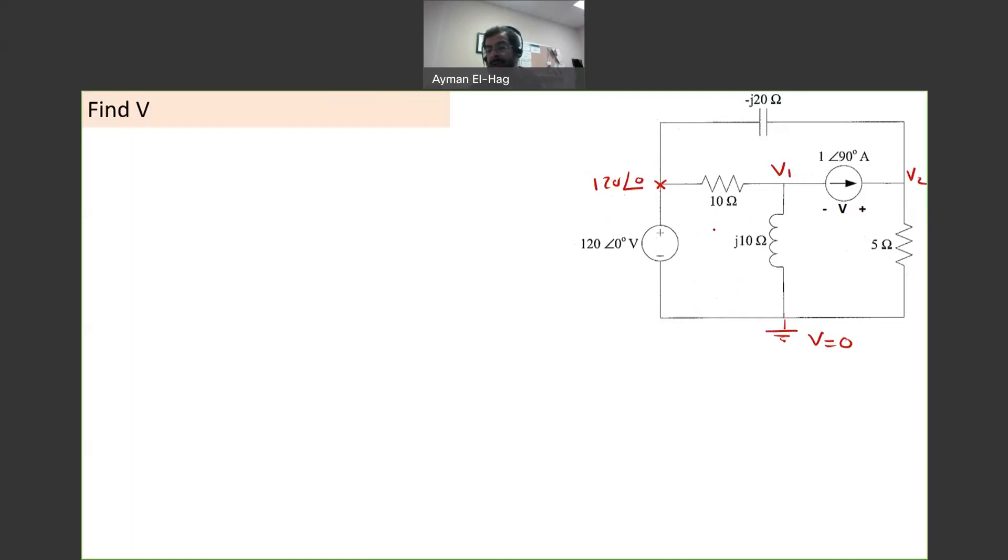One thing we mentioned before in nodal: first, you need to find the voltage at every node. And then after that, you will check what the problem is asking you to find. So for this specific question, you want to find V. And basically, V is nothing but V2 minus V1. So you have to find V1, and you have to find V2 as well.